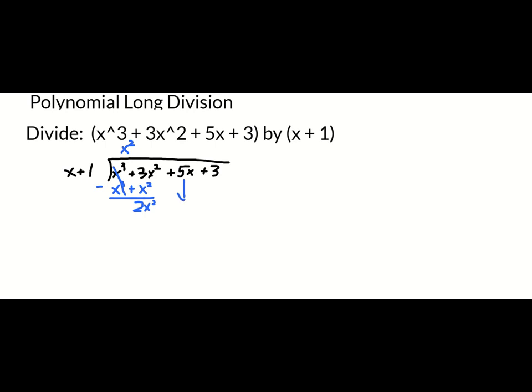The rest of the terms are just going to come down, effectively, because I'm just subtracting zero. I have zero x's, so my 5x will just come down. And that gives me 2x squared plus 5x plus 3.